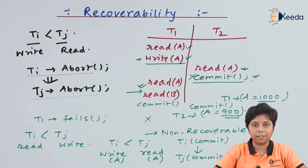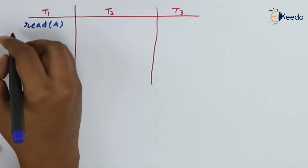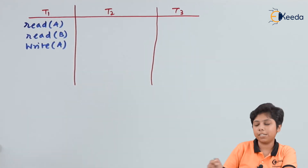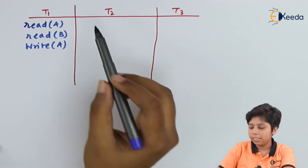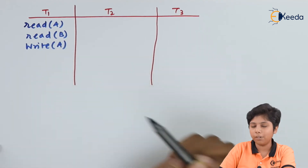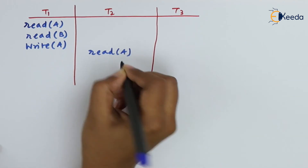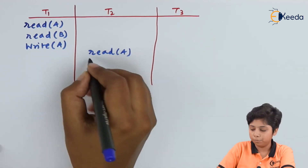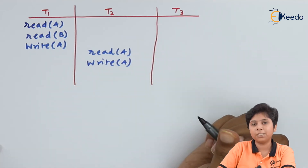Even if a schedule is recoverable, there is one more problem: cascading rollback. Consider another example: T1 reads data items A and B and writes A. T2 reads the value of A that was written by T1, then T2 modifies that value. T3 then reads the value that was updated by T2.